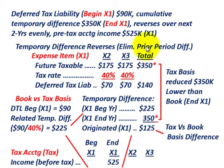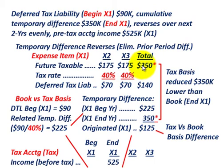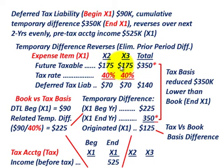That's where we're going to eliminate any prior period differences. We'll use it as an expense item. For year x1, our temporary difference is that $350,000 was taken as an expense for tax accounting. But for financial accounting or book accounting, this $350,000 is going to be expensed out in year x2 and year x3. So for tax accounting, it's going to be a future taxable amount of $175,000 for each of the next two years, because we took the entire expense in year x1 for tax accounting.